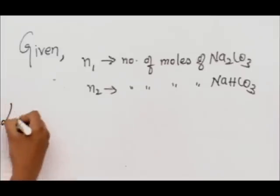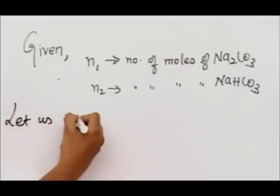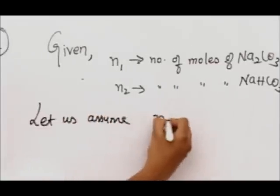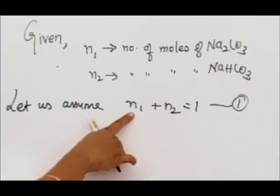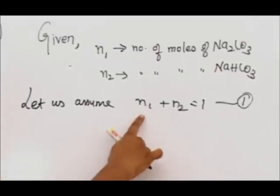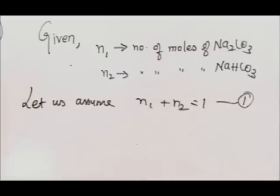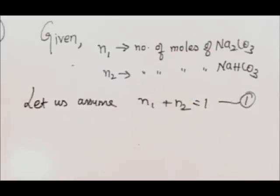Now let us assume n₁ plus n₂ equals 1. This is our assumption only. It's a mixture where n₁ is the number of moles of Na₂CO₃ and n₂ is NaHCO₃, which equals 1. We are considering that because we do not know the exact value.